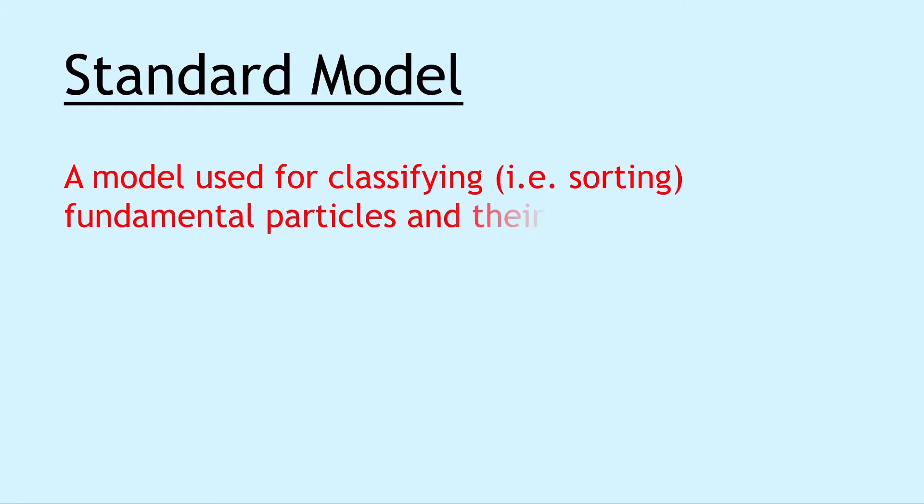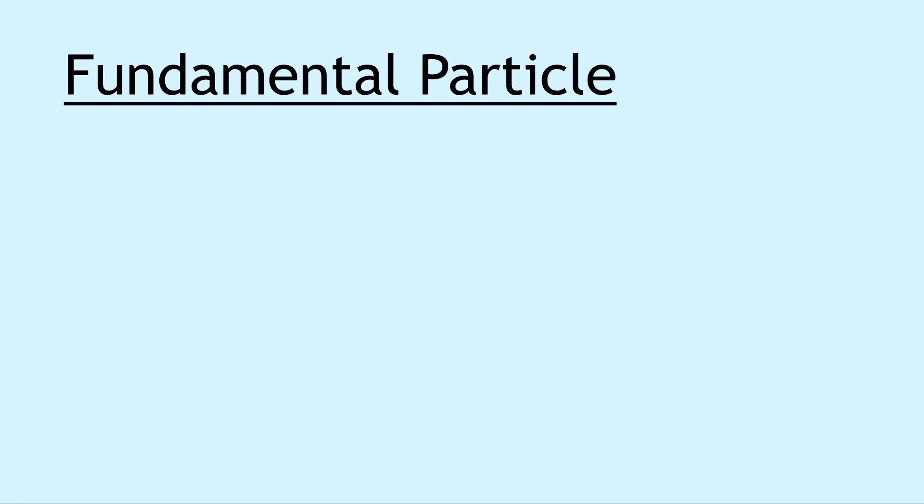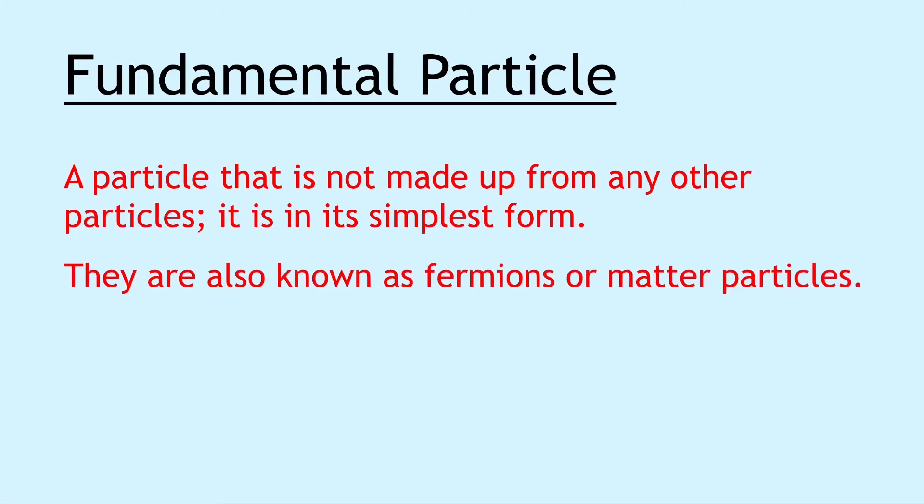Moving on, we have the standard model, which is a model used for classifying, i.e., sorting fundamental particles and their interactions. It's a bit like the periodic table for elements but for particles. Next we have a fundamental particle, which is a particle that is not made up from any other particles. It is in its simplest form. Fundamental particles are also known as fermions or matter particles.